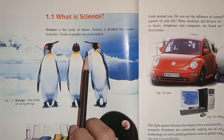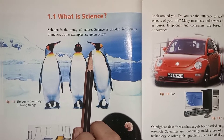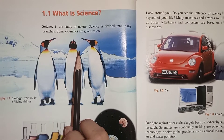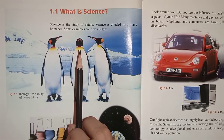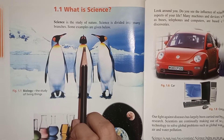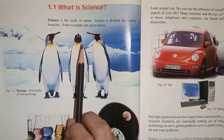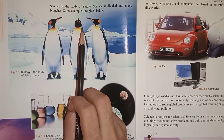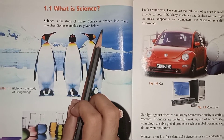In our surroundings we have living things and non-living things. In living things we have animals and plants — how plants prepare their food, how animals eat and digest their food, how reproduction happens. All these living and non-living things in our surroundings together make up science, and science is the study of nature.